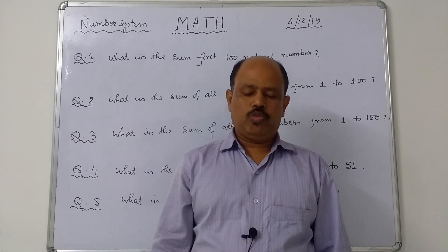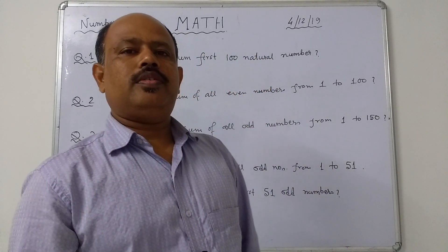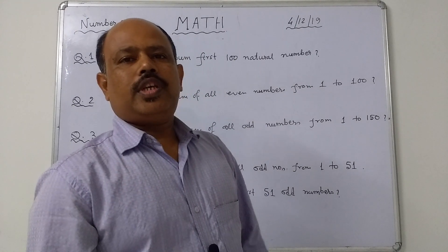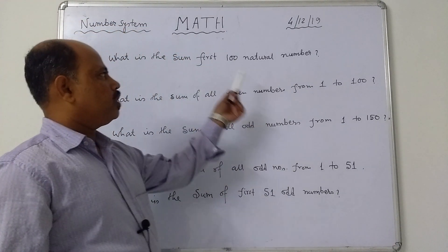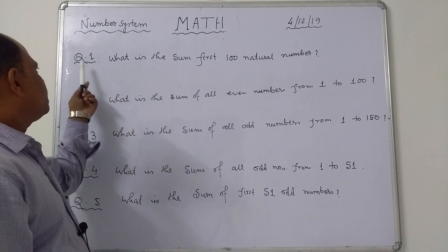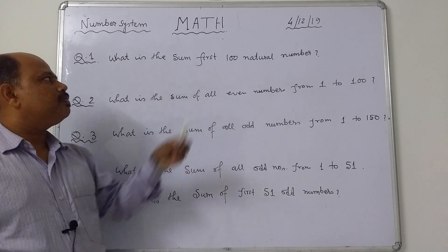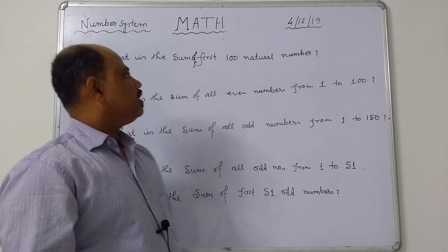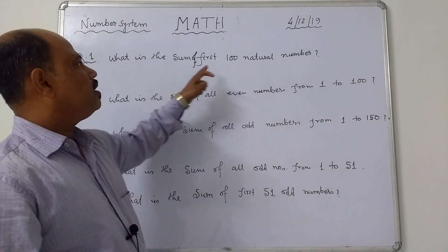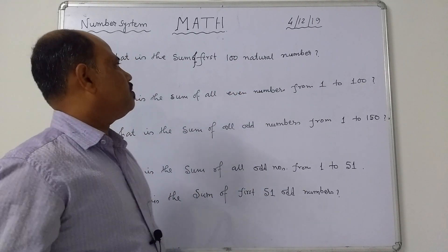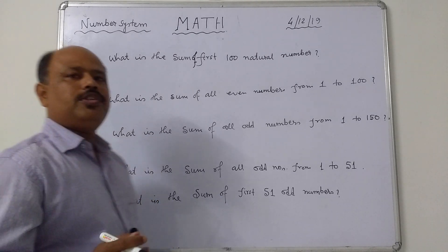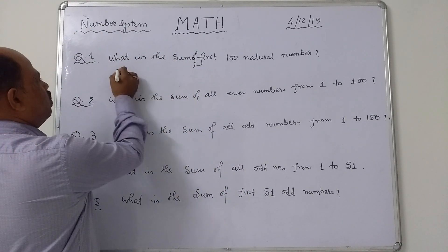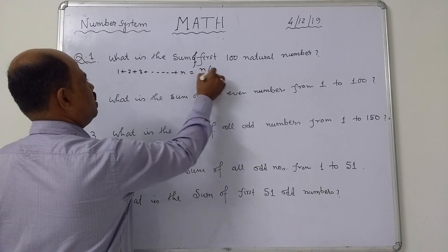So, if you have a question: what is the sum of first hundred natural numbers? You know the formula — sum of consecutive natural numbers, that is n into n plus 1 by 2. That means 1 plus 2 plus 3 plus dot dot dot n equals n into n plus 1 by 2.